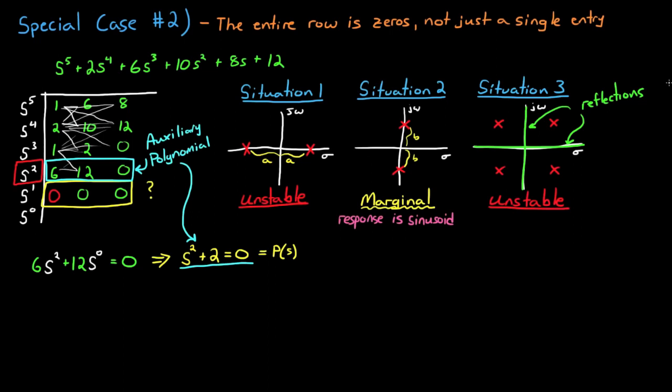And for simplicity, I'm going to call this auxiliary polynomial P. Now take the derivative of this polynomial P, and you can replace the row of all 0's with these new coefficients.